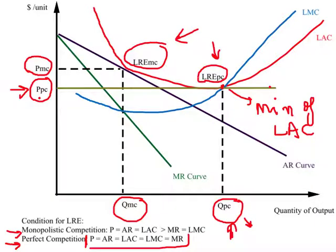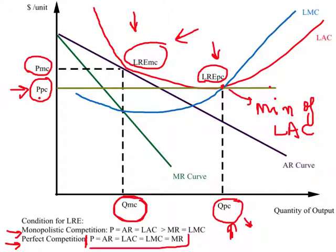For a firm under monopolistic competition, the long-run equilibrium is always to the left of long-run equilibrium for a firm under perfect competition. In other words, output produced under monopolistic competition is always less than output under perfect competition. If output under perfect competition represents 100 percent capacity utilization, then under monopolistic competition we are underutilizing our productive capacity — what we have is excess capacity.